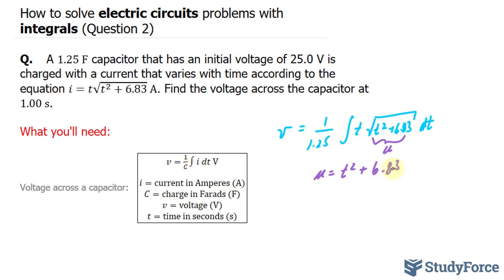Differentiating with respect to t, I end up with du over dt is equal to 2t. I use the power rule here, plus the derivative of a constant, in this case 6.83, is 0.